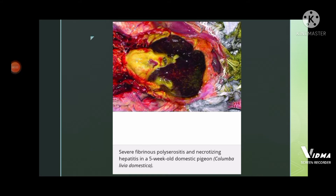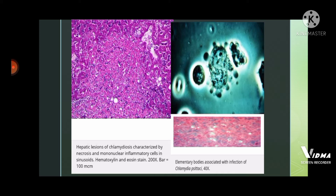Today we are going to study about chlamydal diseases. In the given picture, you are seeing severe fibrinous polyserositis and necrotizing hepatitis in a five-week-old domestic pigeon (Columba livia domestica). In the next picture, the hepatic lesion of chlamydiosis is characterized by necrosis and mononuclear cell infiltration in sinusoids, shown with hematoxylin and eosin stain. The third picture shows fluorescent bodies.